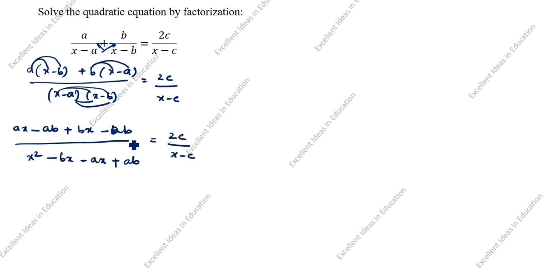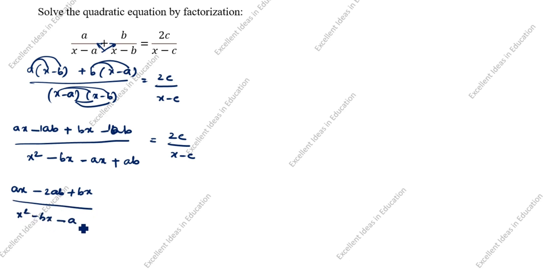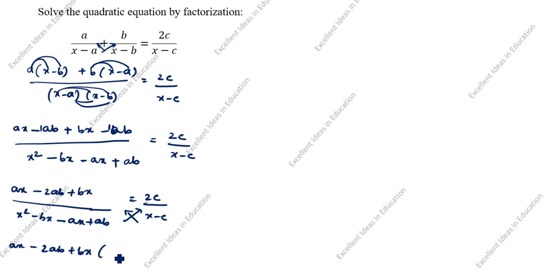You see here plus AB and here is also plus AB — they cancel. The coefficient is 1. So AX minus 2AB plus BX, divided by x squared minus BX minus AX plus AB, equal to 2C divided by x minus C. Now cross-multiply this and this. AX minus 2AB plus BX, open the bracket x minus C, equal to 2C, open the bracket x squared minus BX minus AX plus AB.